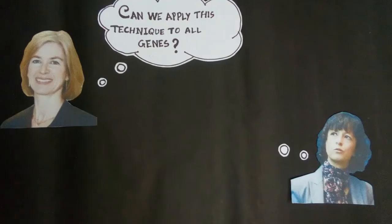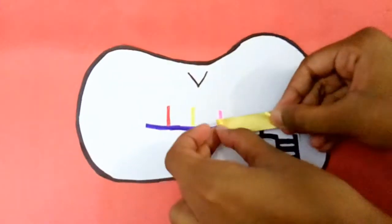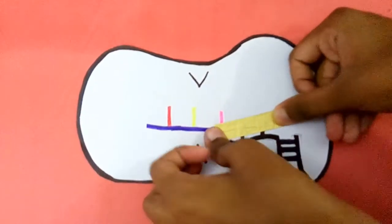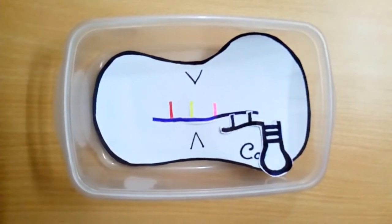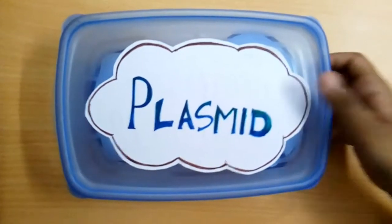Researchers thought of using this same method to cut any gene of any cell. They joined the CRISPR RNA and tracer RNA together to make a single guide RNA. They also made a plasmid of the whole thing to insert it into target cells.